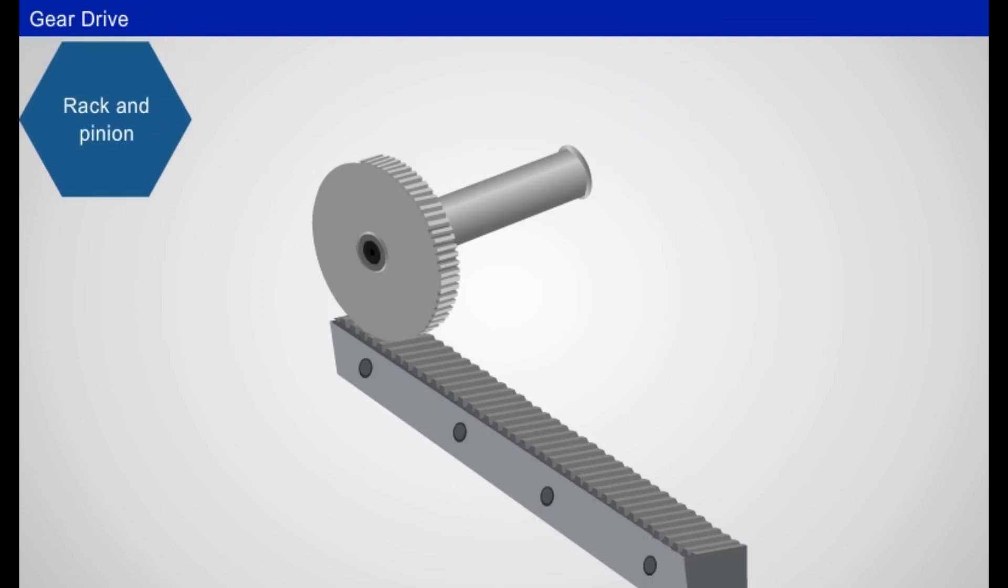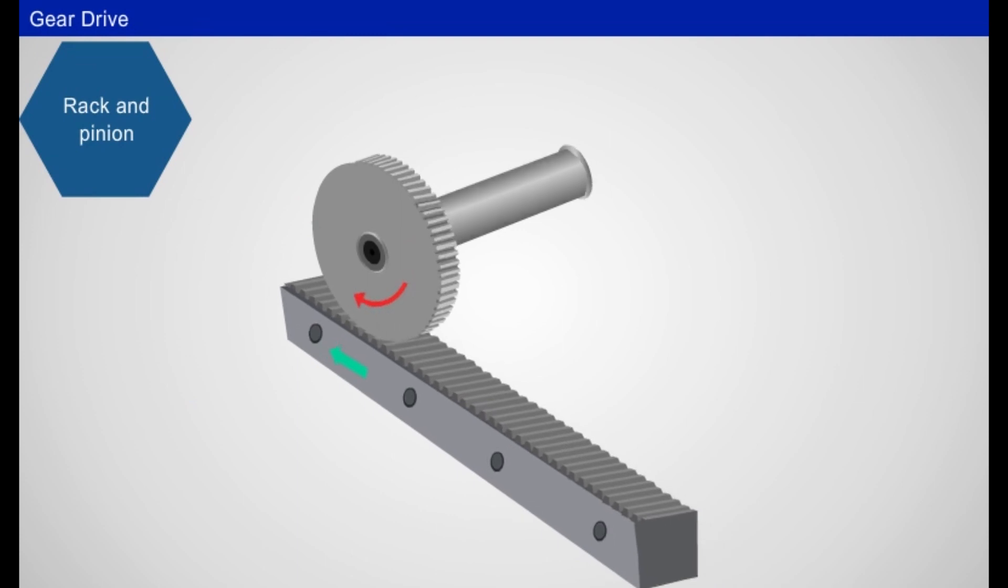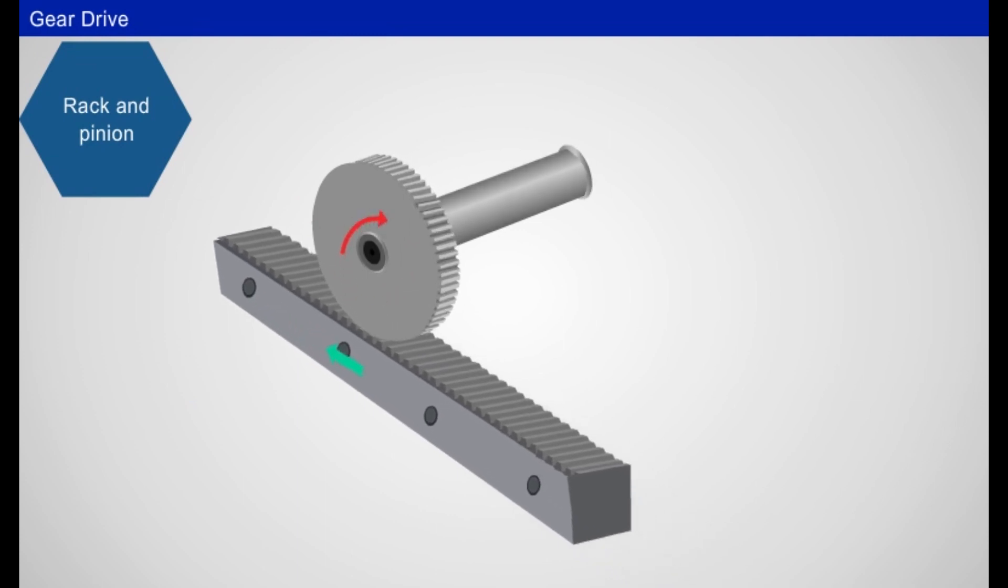Rack and pinion: Here, the wheel is known as pinion and the one-sided straight threaded strip is known as rack. This assembly converts rotary motion into straight line motion.